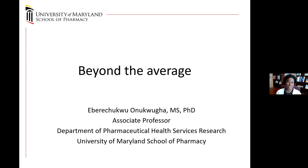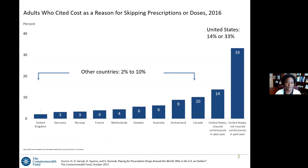We think about the average, particularly in statistics, as a way to generally characterize a population efficiently. Many times that number is informative, but there are times when it is less informative and may even be misleading. Let's consider one example — a graph from a report put out by the Commonwealth Fund, providing data for 10 countries where they surveyed adults to identify who cited costs as a reason for skipping prescriptions or skipping doses.